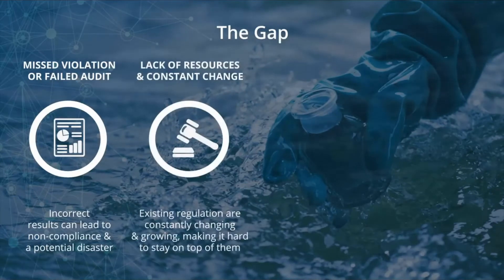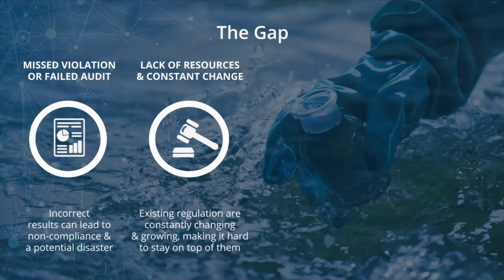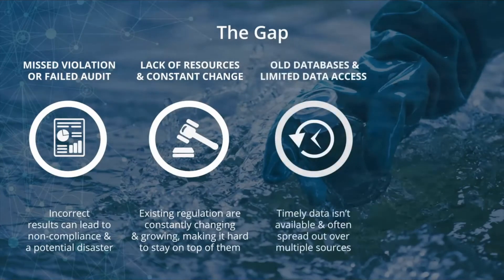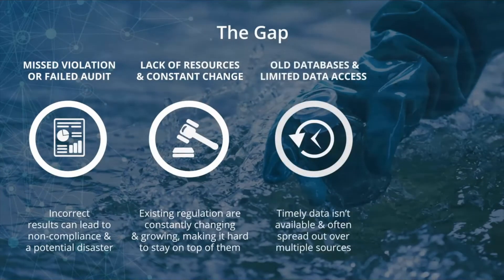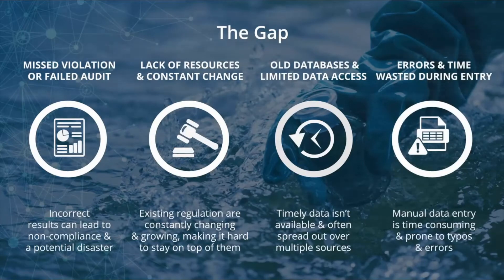A second gap relates to constant changes and resource limitation. Existing regulations are constantly changing and growing, making it hard to stay on top of them. Other clients were using old databases or spreadsheets where their data was locked in a single file across the organization, not available for timely reporting. Lastly, most utilities experience errors in their data or waste hours of time manually performing data entry.